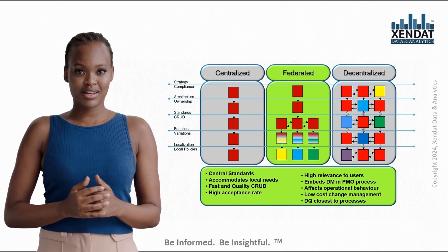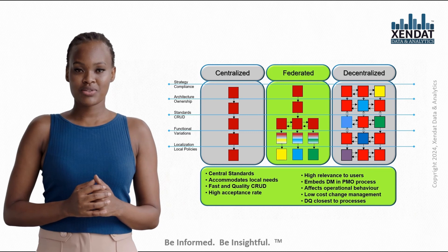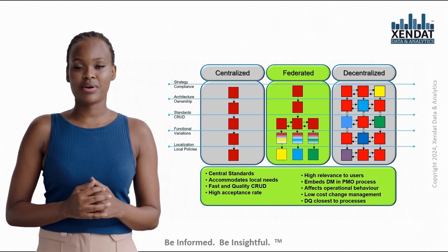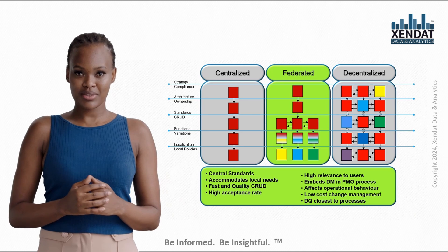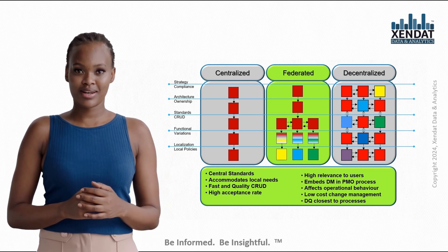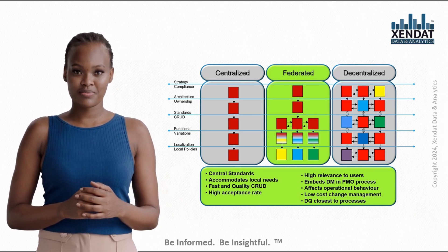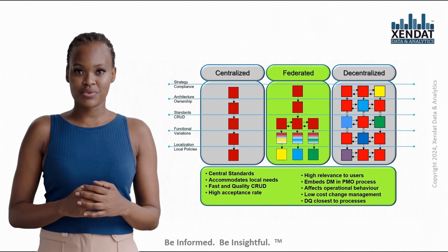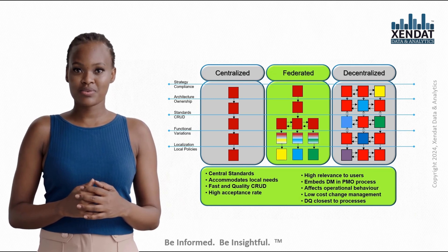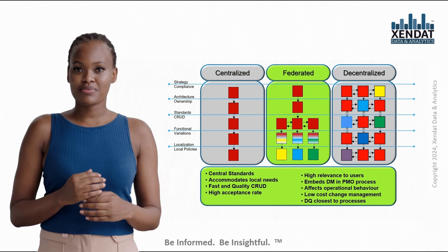Think of it like different branches or departments all playing by slightly different rulebooks. They have autonomy, but without cross-program alignment, there's a risk of inconsistencies and data silos. Each team may be addressing its own data issues, but the organization as a whole may struggle to gain a unified view of data.